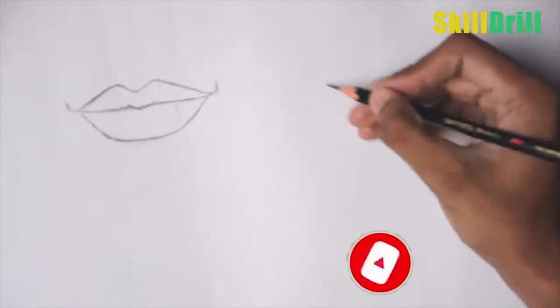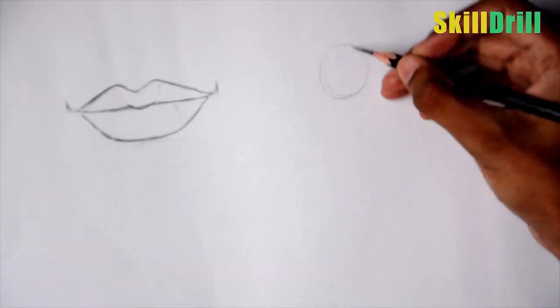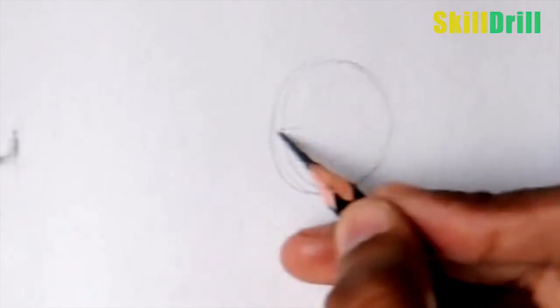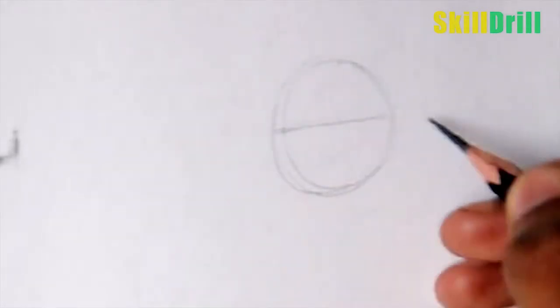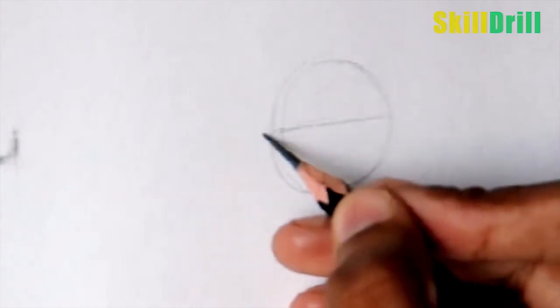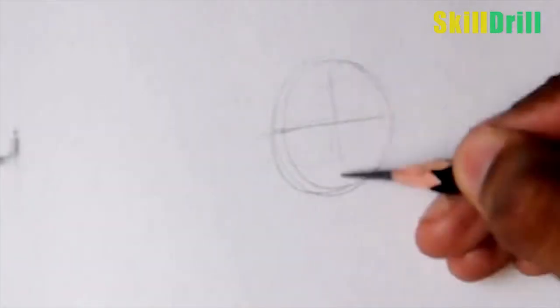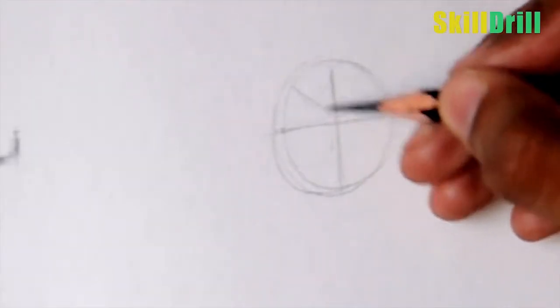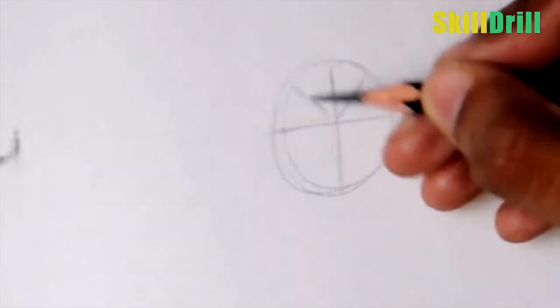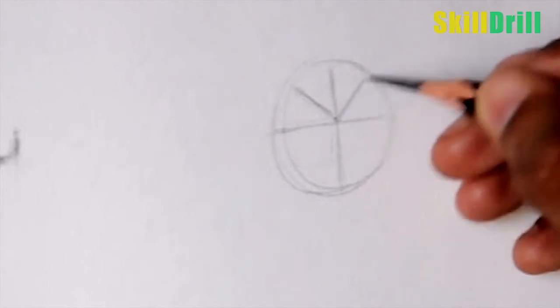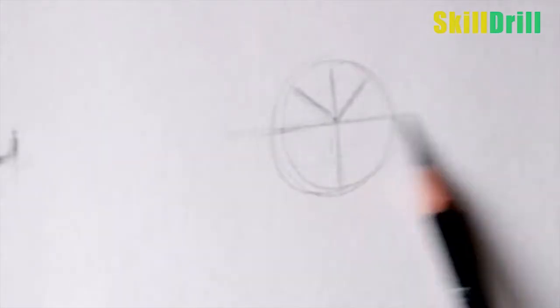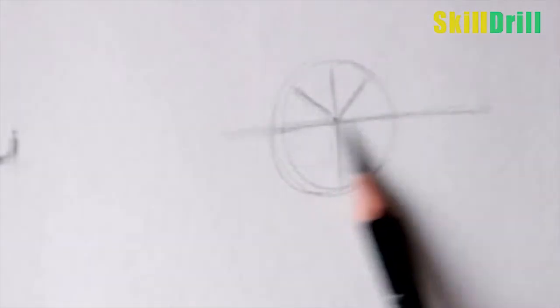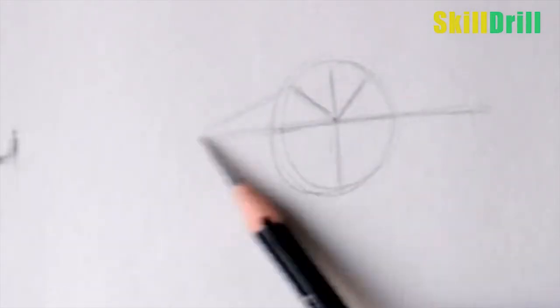So the first technique is you have to start with a circle and divide it. The upper part will be a little less. Don't divide it exactly from the middle, keep the upper line a bit smaller, then divide it from between. Now simply make a V-shape from this point. Extend this line a little more and make a mountain shape.